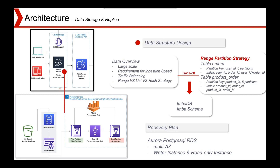We chose a range partition strategy for two tables: the orders table and the product order table. For the orders table, which has over 3 million distinct orders, we use order ID as the partition key, partitioned into five partitions, with user ID, order ID, and user-plus-order ID as three indexes. For the product order table, we use product ID as the partition key, also range-partitioned into five partitions, with product ID, order ID, and product order ID as indexes. In our RDS, the database is named InbaDB and the schema is named Inba schema.